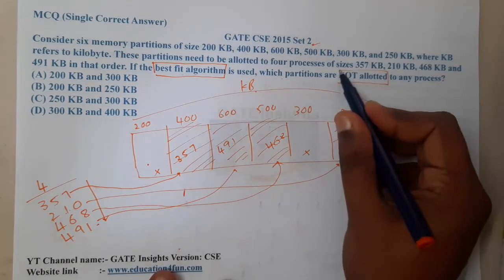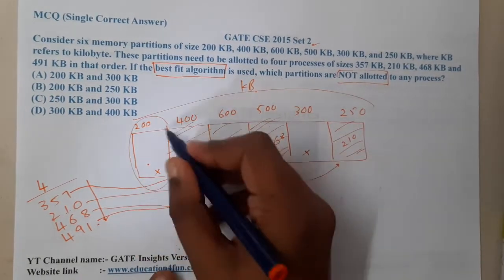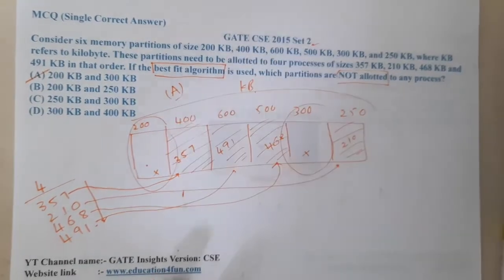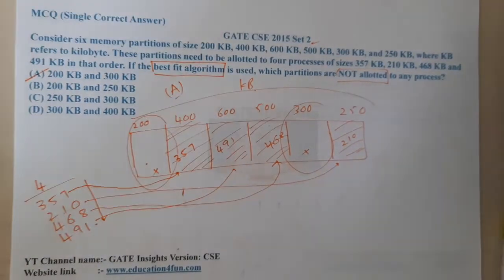In the question they are asking what are the not allocated slots. So 200 and 300 are the slots which are not allocated. So option A will be the correct answer.